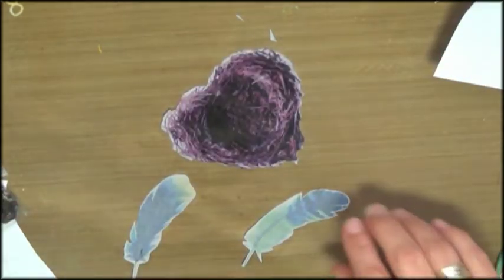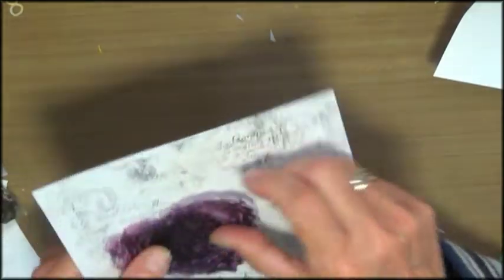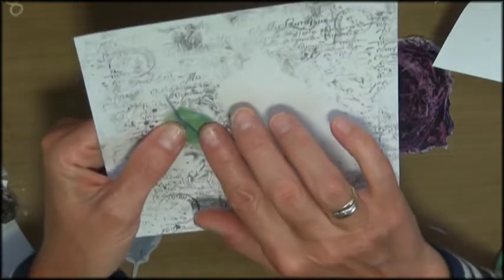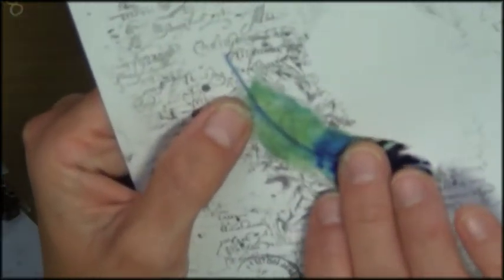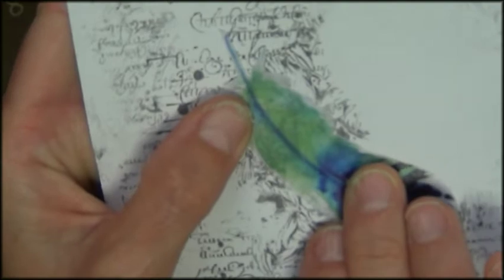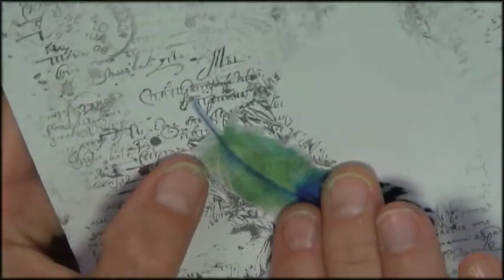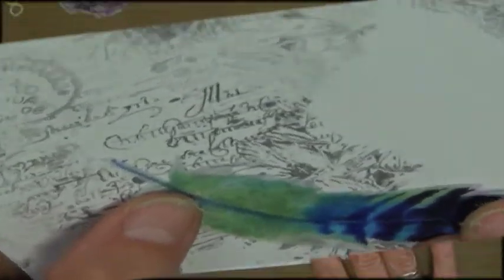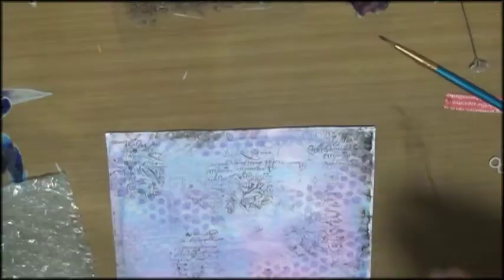So the oil makes my image turn translucent. You won't see that with this one, but you will see it with this one. You can see that the stamped images underneath are coming, are shining through.